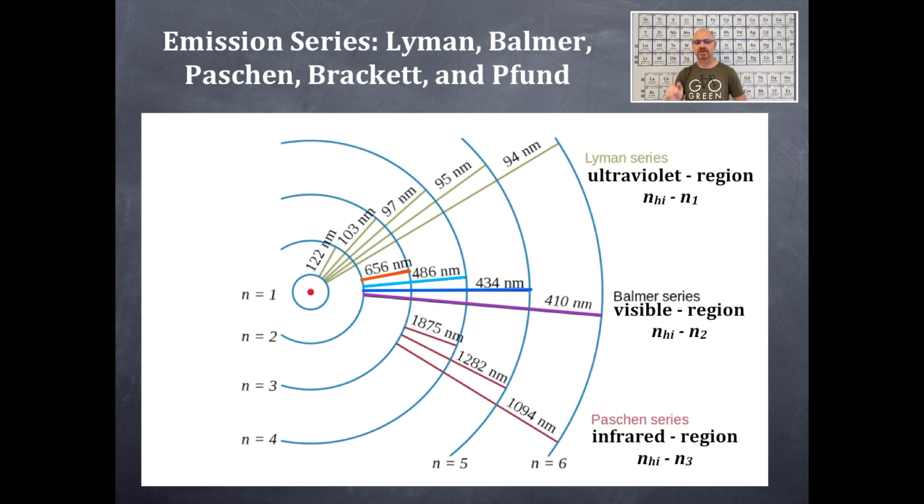The next one is the Paschen series, and that is the infrared region. So that's lower in energy, and that's N of high to N of three. Again, it's not as great of a fall, and that's why it's in the infrared. It doesn't have as much energy.